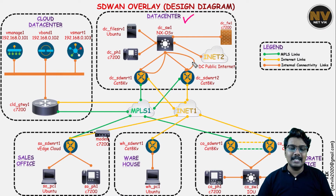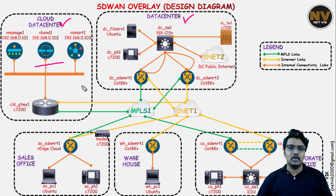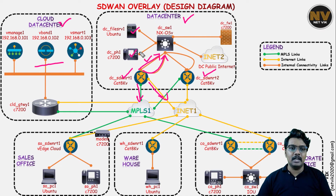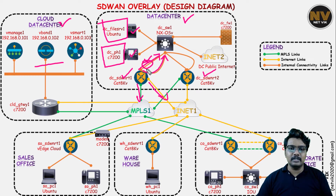We also have the customer data center — this is where actual customer equipment lives, as opposed to the cloud data center where we are just hosting the controllers. Think of it as getting some space in the cloud to host those controllers. In the customer data center, we are going to bring up two SD-WAN routers for redundancy, both having a leg on both MPLS and the internet. There is also connectivity to the LAN: the first connectivity is for VLAN 10 and VLAN 20, which will be our VPN 10 and VPN 20. VPN 10 will be our data VPN and VPN 20 will be our voice VPN — I will do a sub-interface and one will serve VPN 10 and another will serve VPN 20.